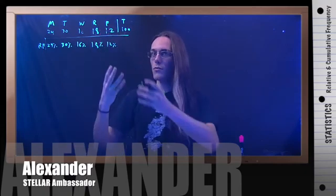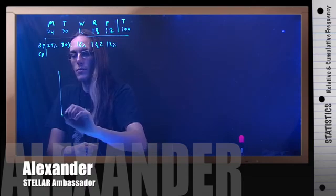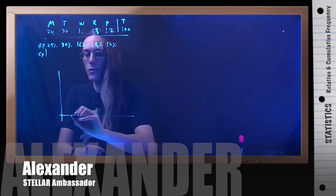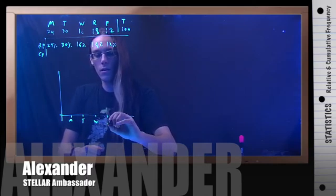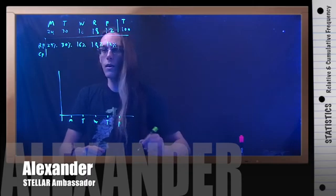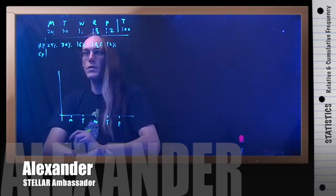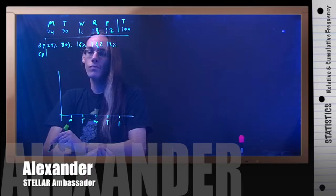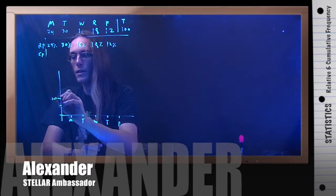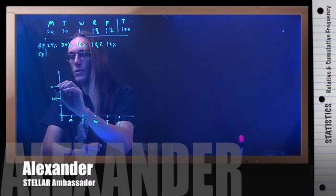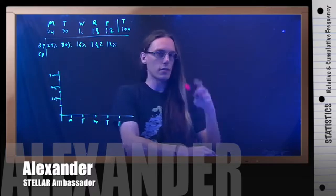Let's construct a relative frequency graph. Down here I'm going to have Monday, Tuesday, Wednesday, Thursday, and Friday on the x-axis. The highest percentage that ever happens is 30%, so that's how high up I'll go. I'll tick-mark by 5's: 5%, 10%, 15%, 20%, 25%, and 30%.